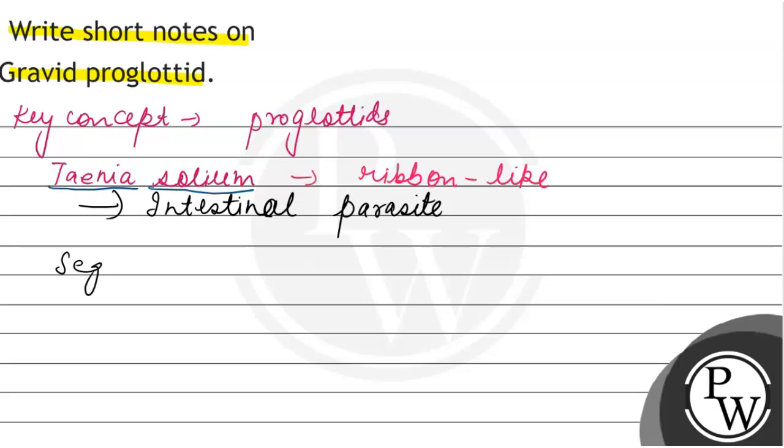As we have talked about the ribbon-like body, it has segmentations present in it. These segmentations are called proglottis.